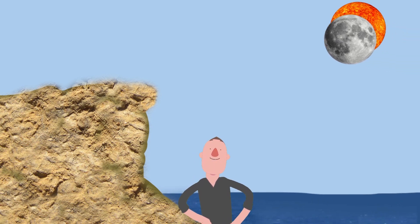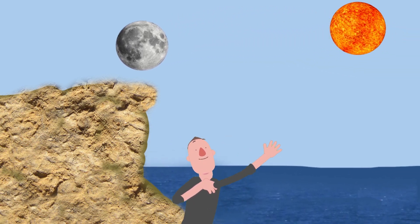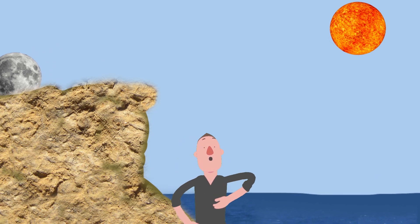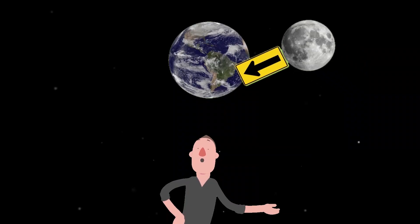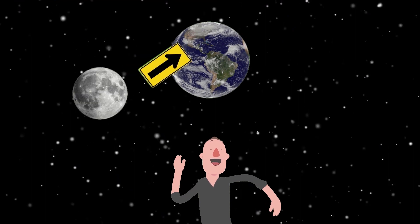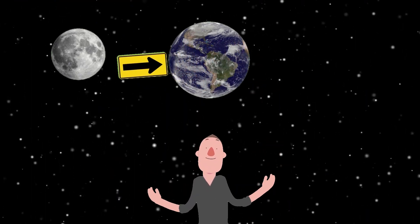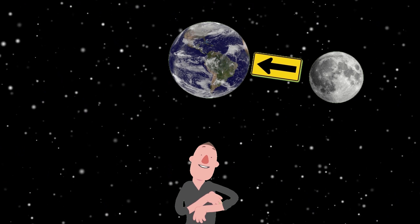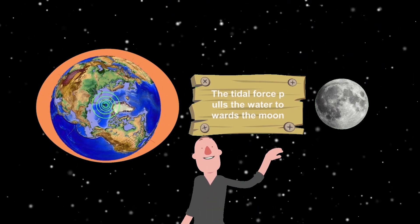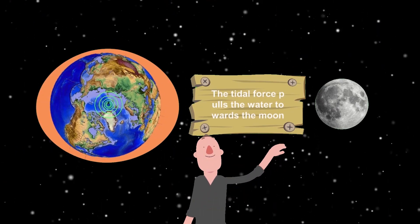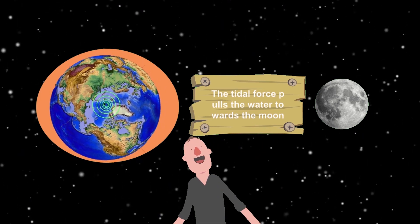High and low tide are caused by the moon. The moon's gravitational pull generates something called the tidal force. The tidal force causes the Earth and its water to bulge out on the side closest to the moon and the side farthest from the moon. These bulges of water are high tide.